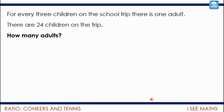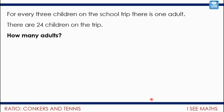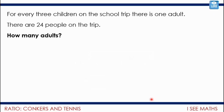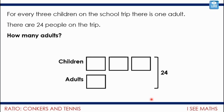I'm going to show how a slight change in wording affects the strategy. 'For every three children on the school trip there is one adult; there are 24 children on the trip — how many adults?' With 24 children and each section worth 8, there'll be 8 adults. But if it says 'there are 24 people on the trip,' the drawing looks the same except the 24 now represents all the people, not just the children — so there must be 6 adults.